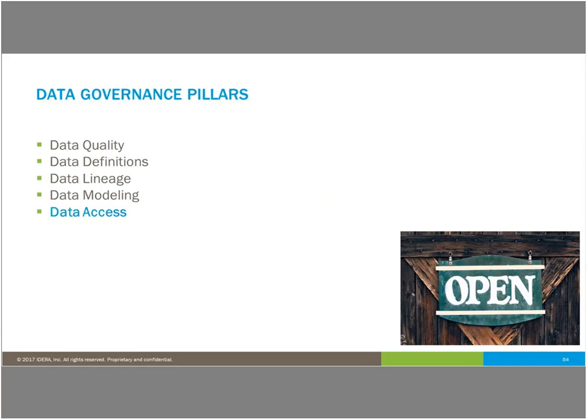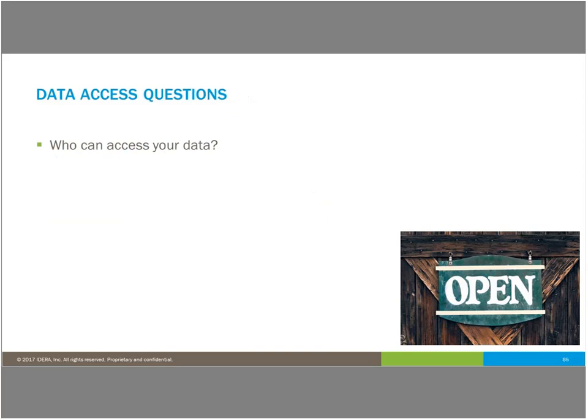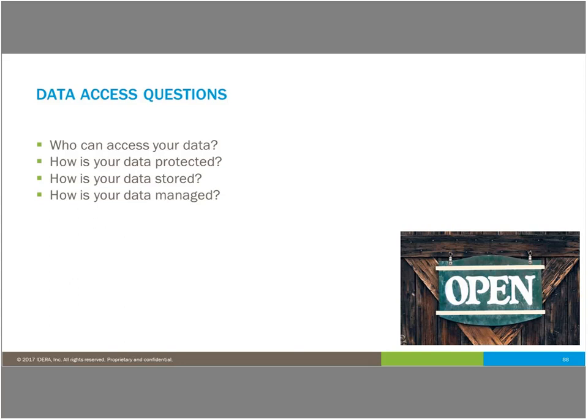The last pillar of data governance is the data access pillar. The questions you should be asking yourself regarding access are: Who can access your data? How is your data protected? How is your data stored? How is your data managed? And who can influence your data? This is really important so that you can keep your information locked and inaccessible to outside systems that might want to do it harm, while actually giving that information to the people who need it and need to make decisions based on it.